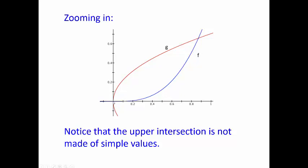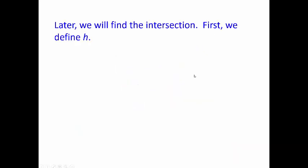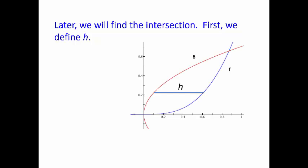In this case the y-value at the bottom intersection is zero. But the upper intersection — I don't know what it is yet; it doesn't fall on a nice value like (0, 1) or (1, 1). We'll come back to find that intersection. First we need to define h. Because the functions are defined in terms of y, we're going to have horizontal height. We're going to define our h that way.